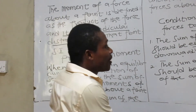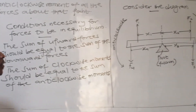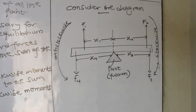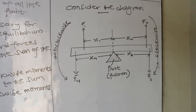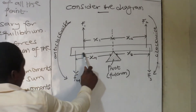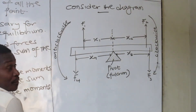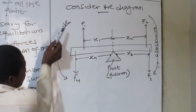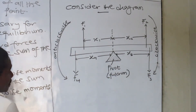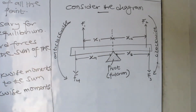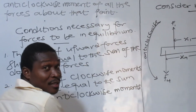Please, let's look at our diagram here. Consider the diagram: there is a beam and there is a pivot, or the fulcrum. Now, these are forces — F1, F2 as downward forces, and F4, F3 as well. When you move this way, that is the anticlockwise direction. And clockwise is the other direction — like the direction a clock moves.